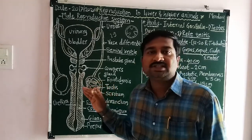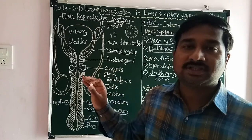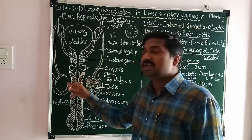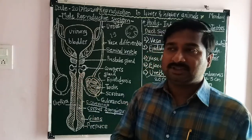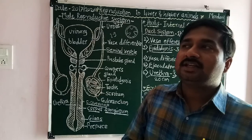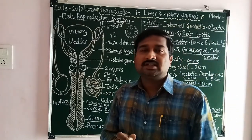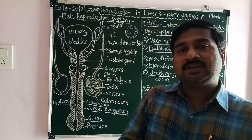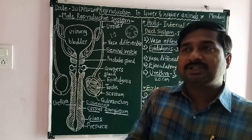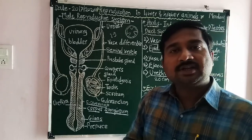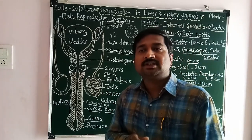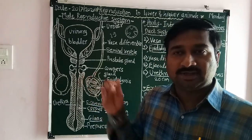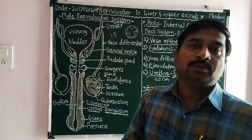Each testis is a muscular, soft, oval structure, and each testis is pinkish or reddish in color. The dimensions are about 2 to 4 cm in length, 3 cm in width, and about 10 to 15 grams in weight.